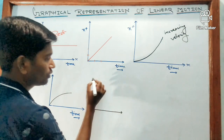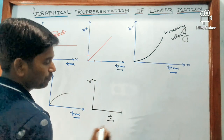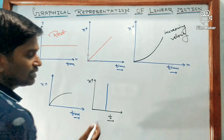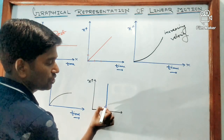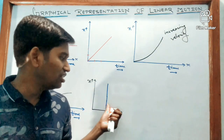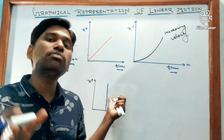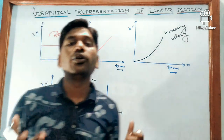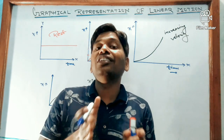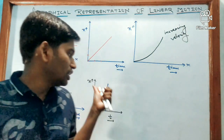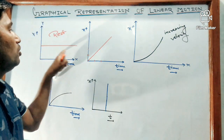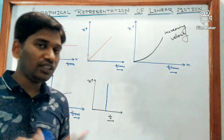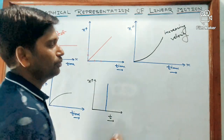Suppose the graph is parallel to the displacement axis — time is not changing but displacement is changing, meaning the body is placed at different positions at the same instant. Such a graph is not possible because a body cannot be at two or three different places at the same time. If a graph is parallel to the time axis, the body is at rest; if parallel to the displacement axis, it is not possible.